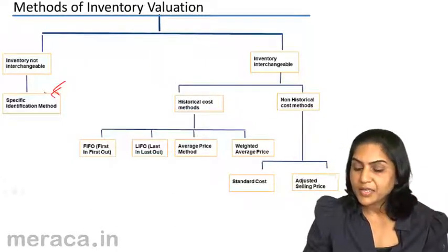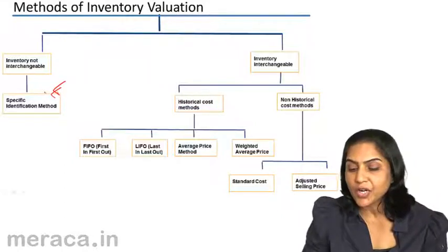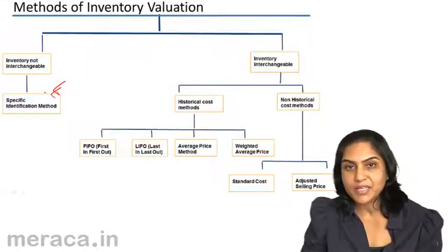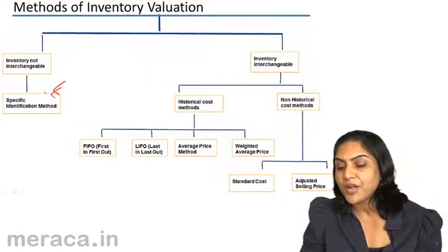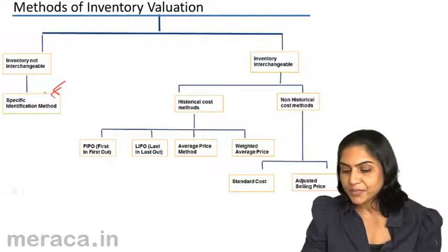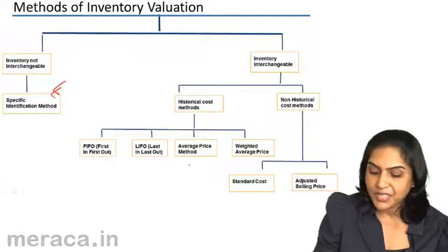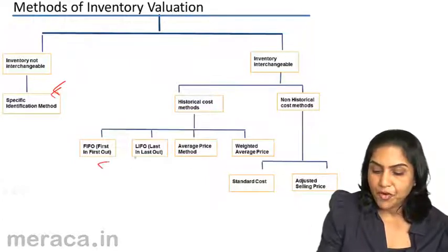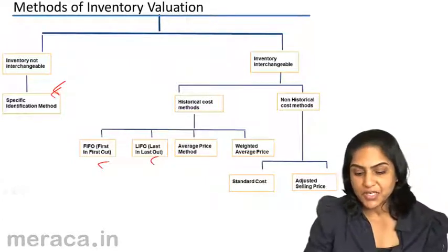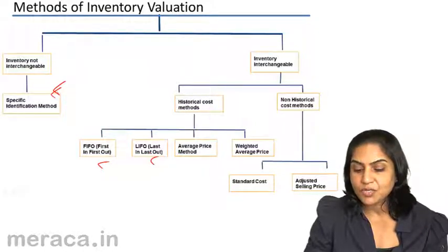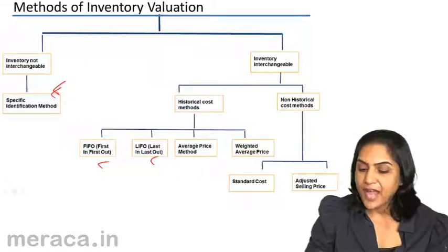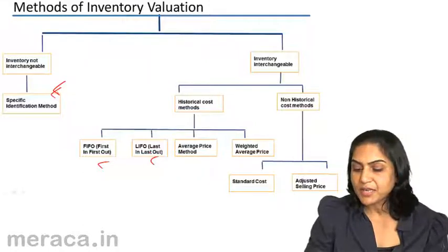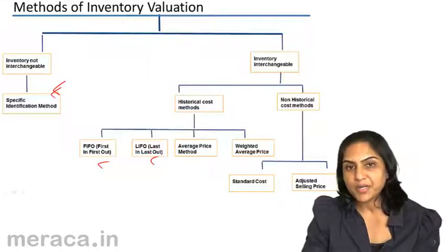Broadly, these have been divided into historical cost methods and non-historical cost methods. We will first cover FIFO and LIFO — first in, first out and last in, first out. And then the average price method and weighted average price. We will then move on to standard cost and adjusted selling price.